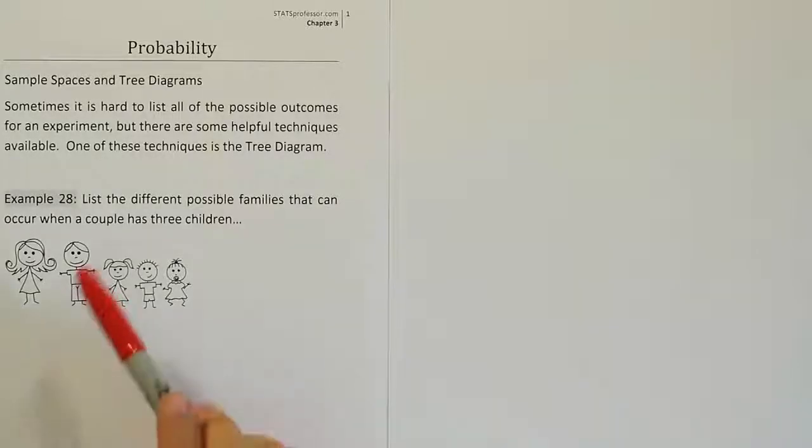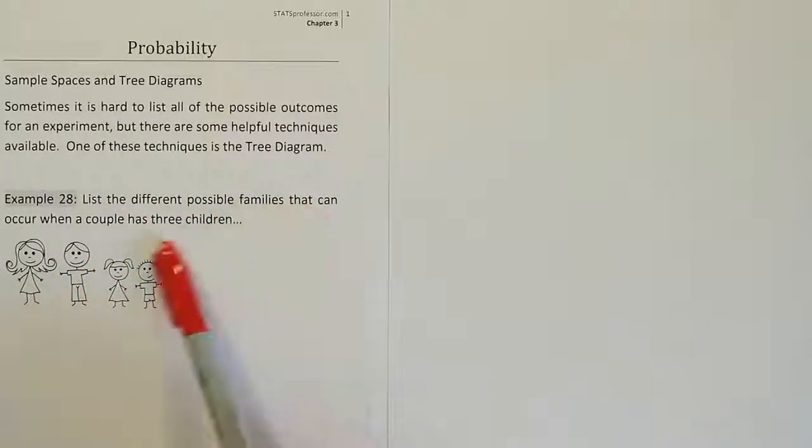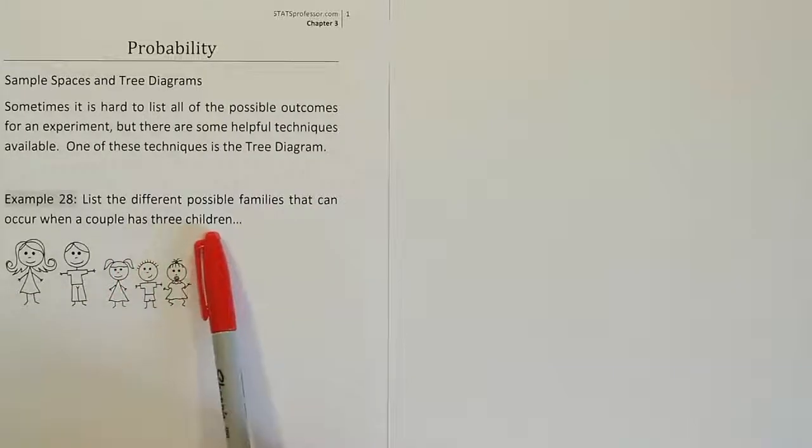Example 28. List the different possible families that can occur when a couple has three children.